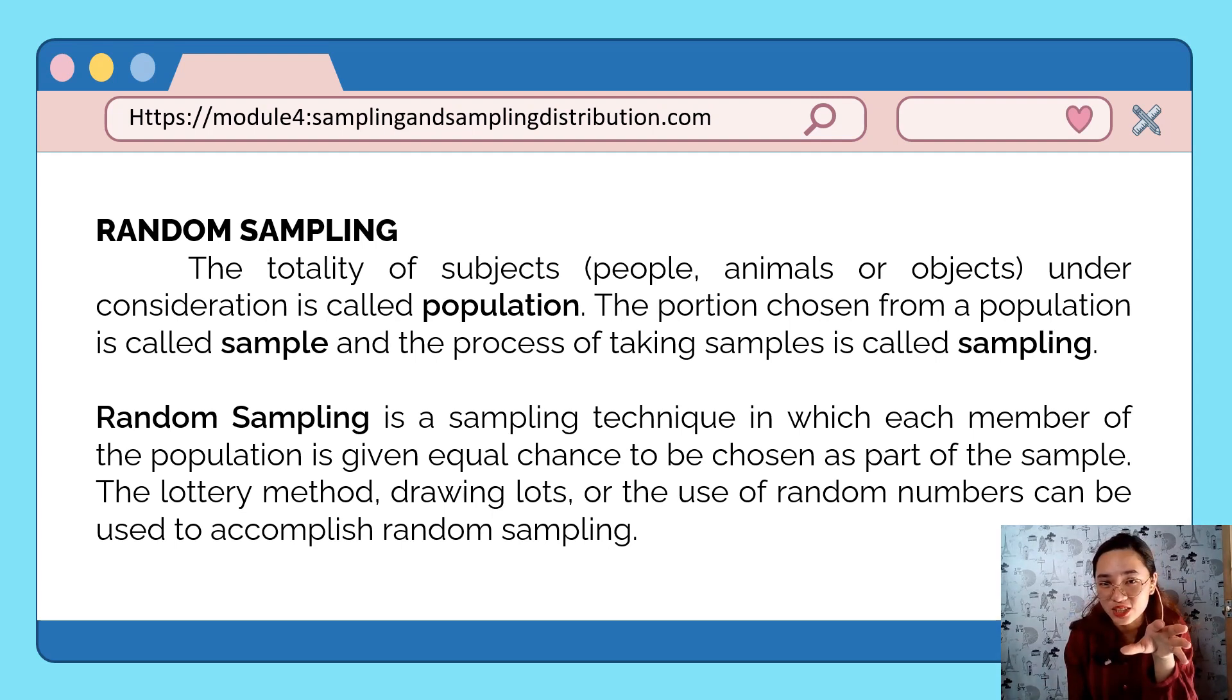What is a sample? It is the portion chosen from a population. This could be a small or large part of your total number or population. Next, the process of taking samples is called sampling. This is one of the most vital parts of our research or study, where you should be very wise and careful in choosing your samples.